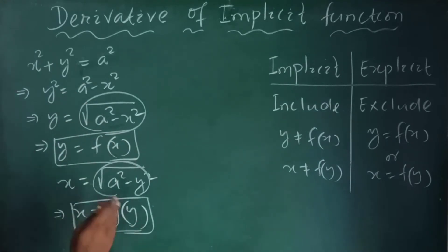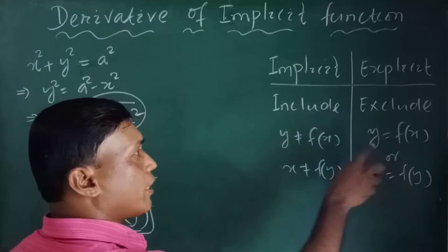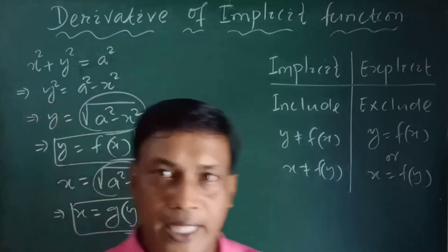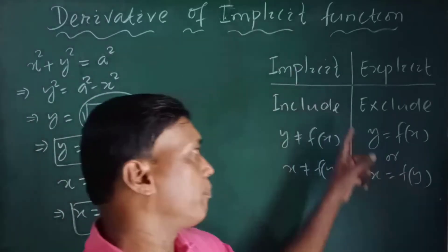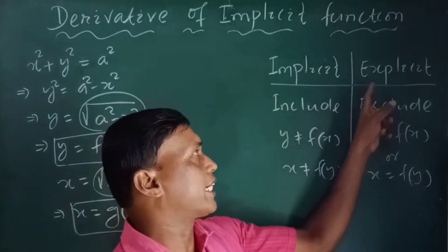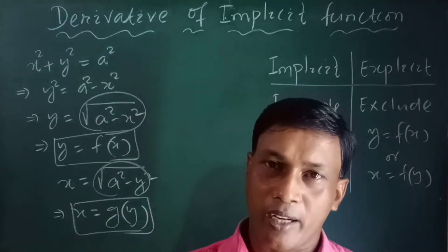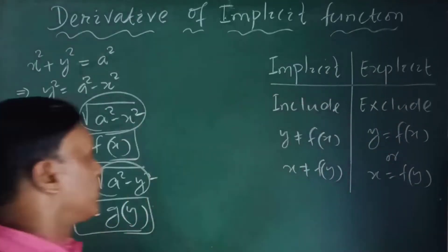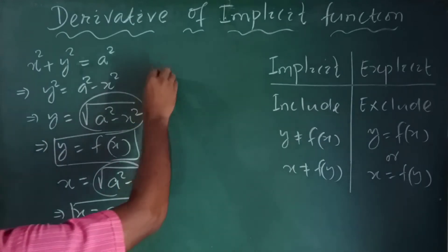That means x and y are separated — they are excluded from each other. This is called an explicit function: the two variables can be separated and expressed independently.